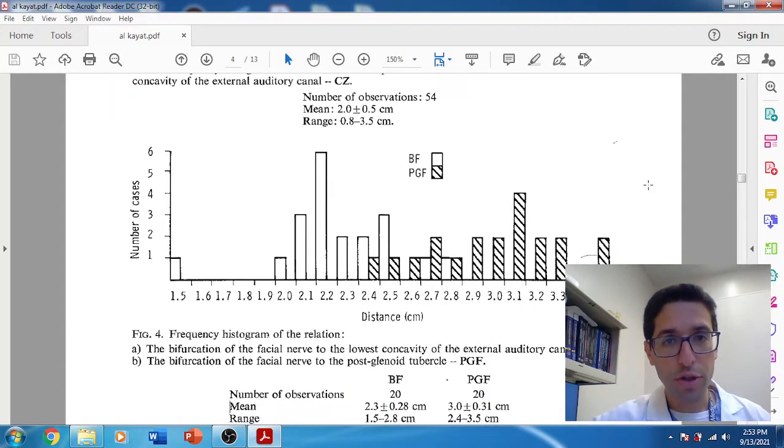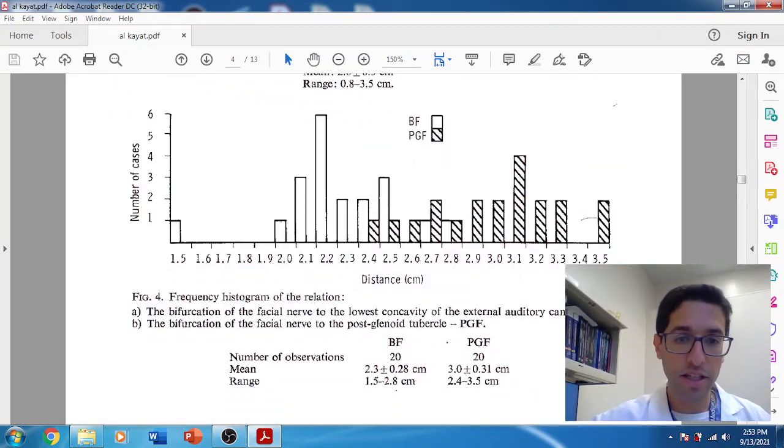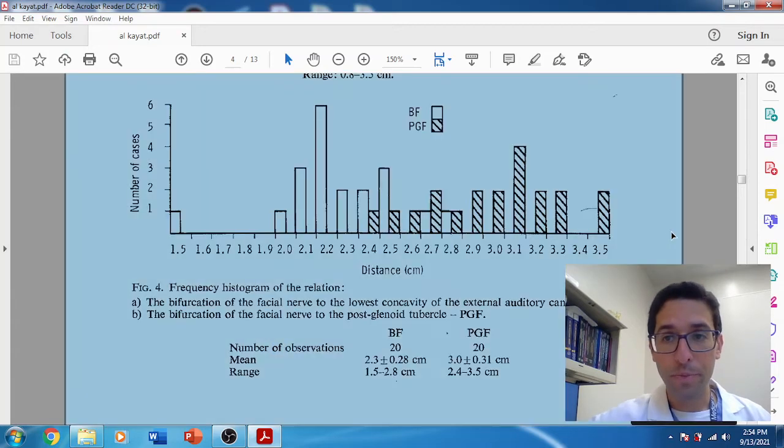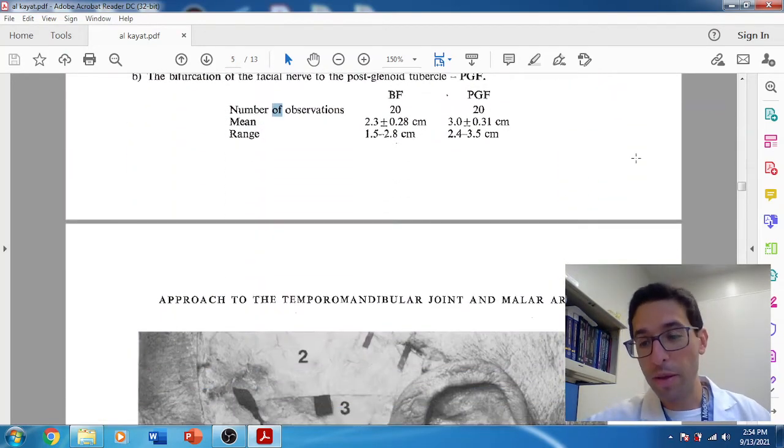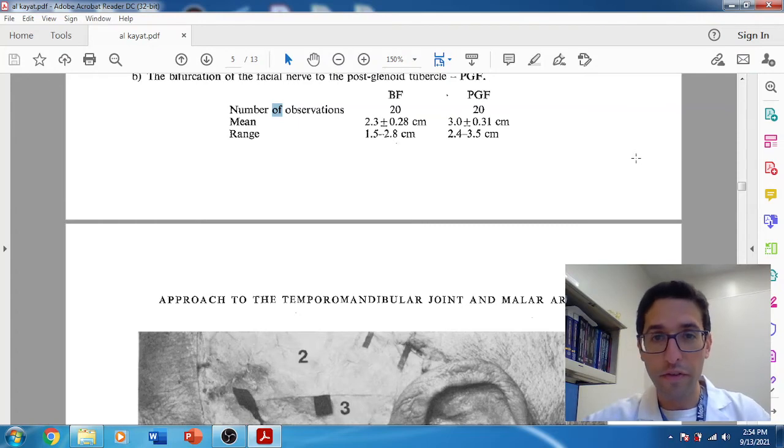We should just mention the other two points that he talked about. One was from B to F. This is the bifurcation if you go straight down. And that mean, that mean, and this is quoted a lot. Obviously, this is between 1.5 and 2.8. And then the posterior glenoid fossa, not really quoted as much, 2.4 to 3.5. All right. So that's really, now that's why this paper is quoted. But I just want to, you know, finish.